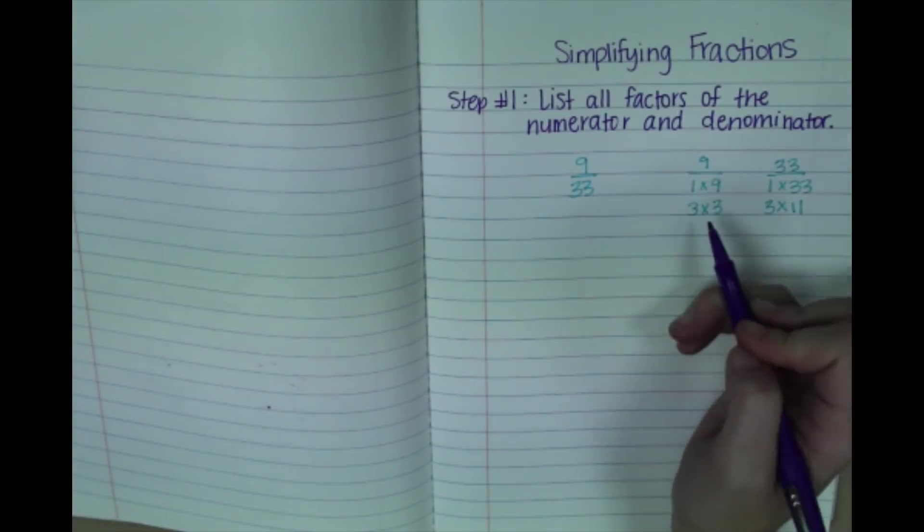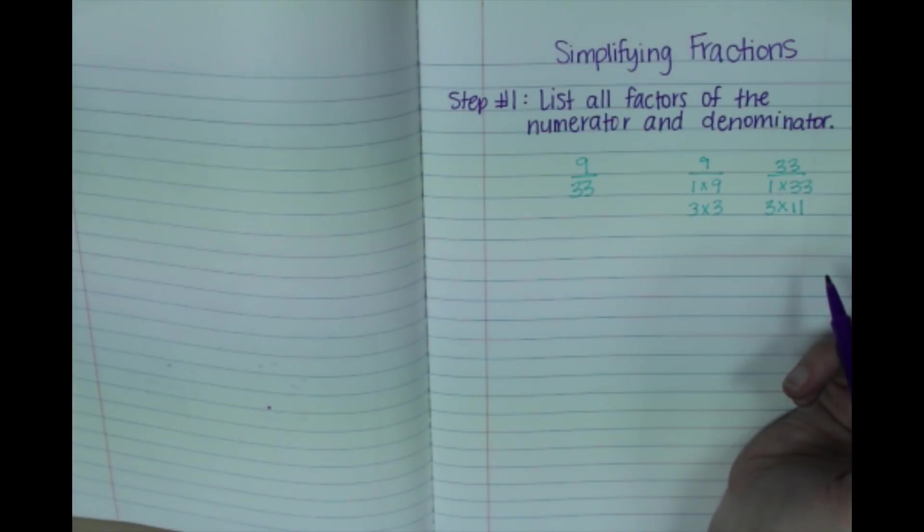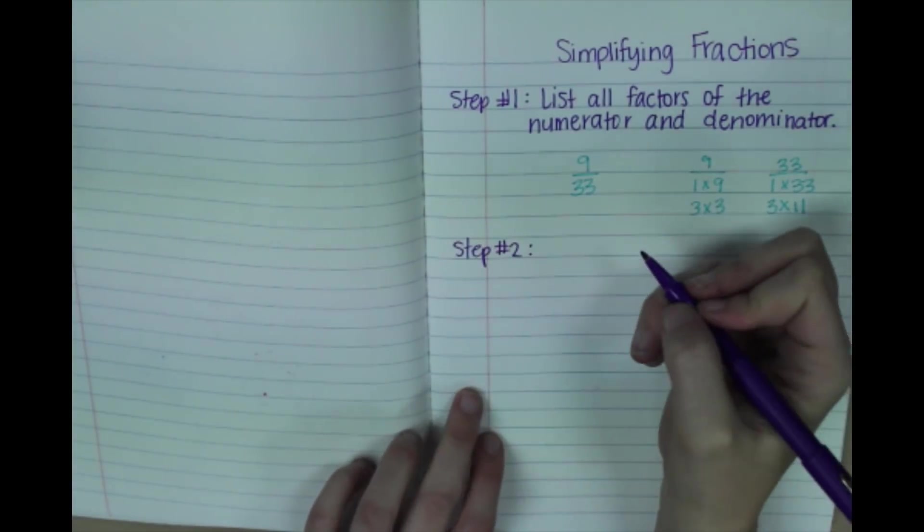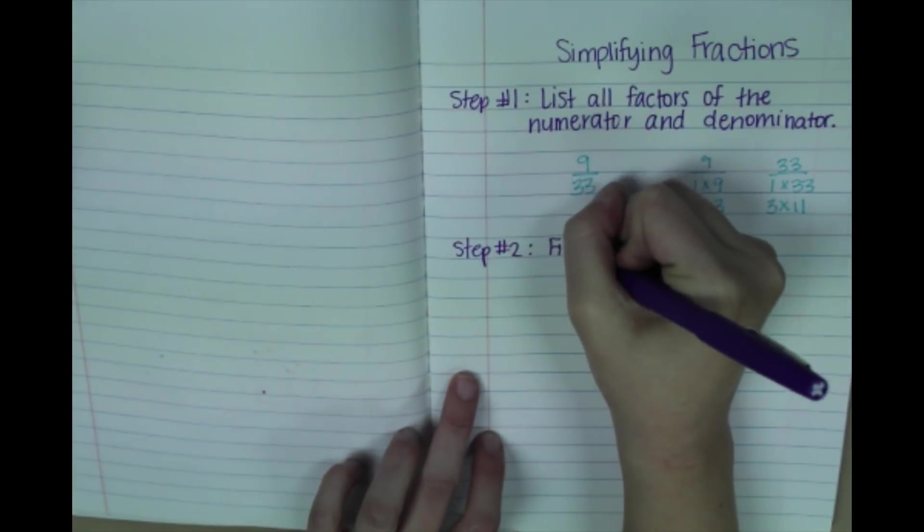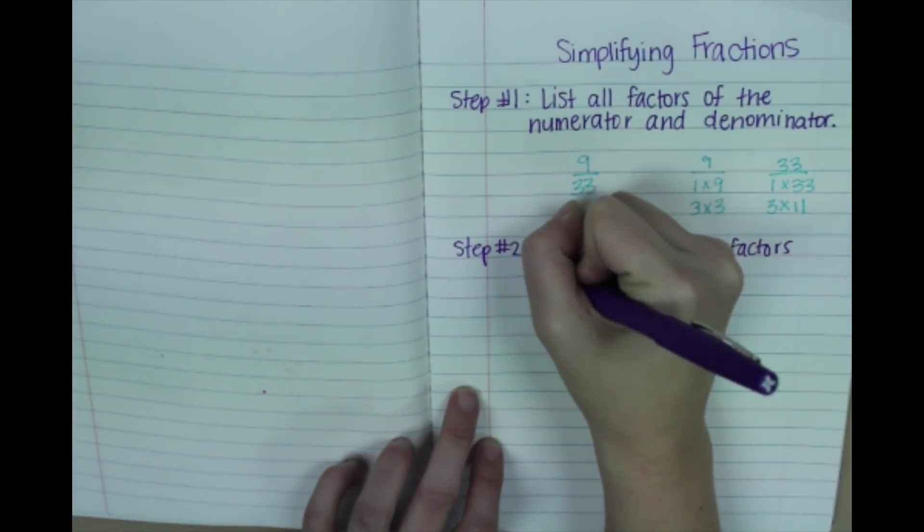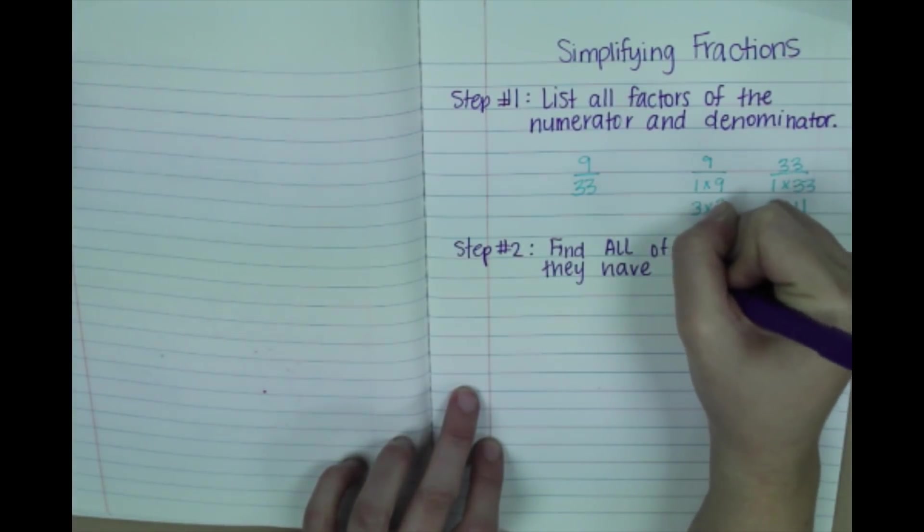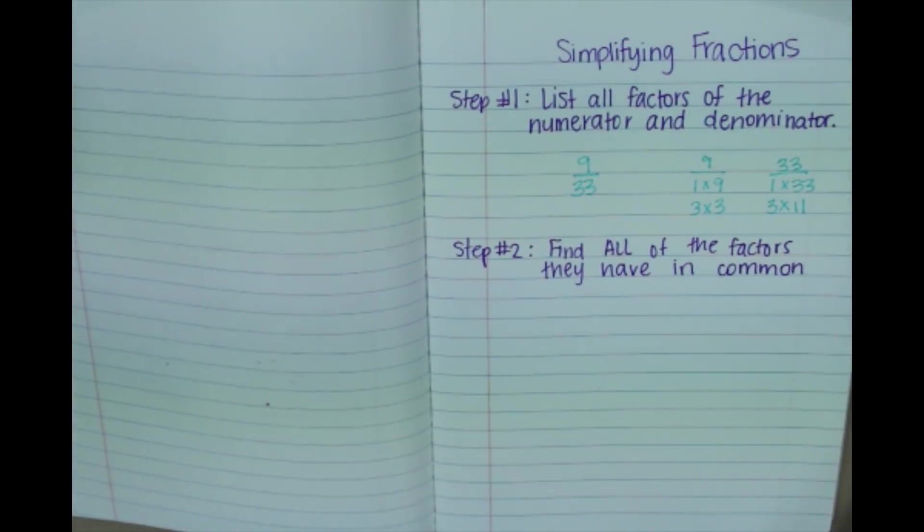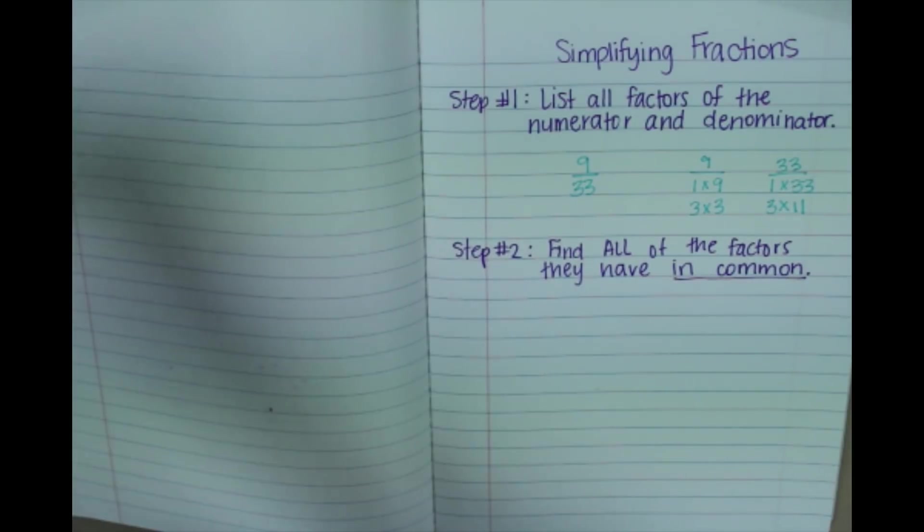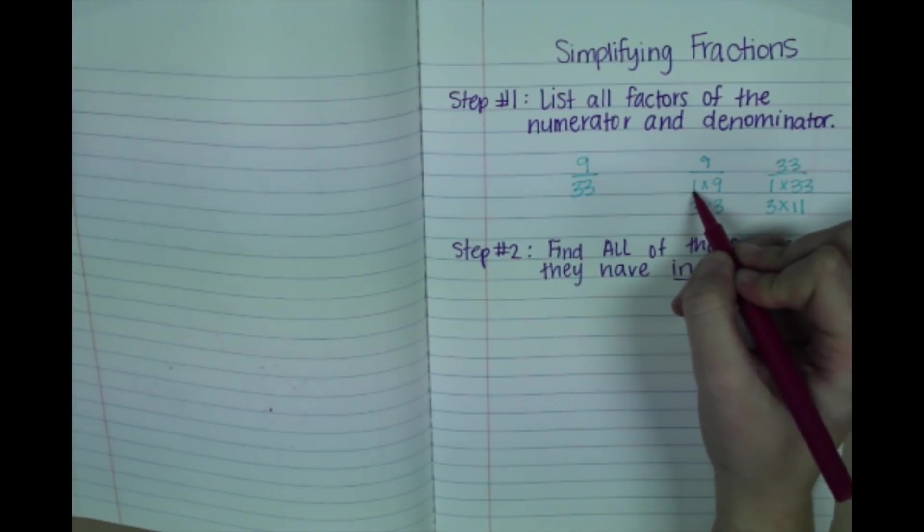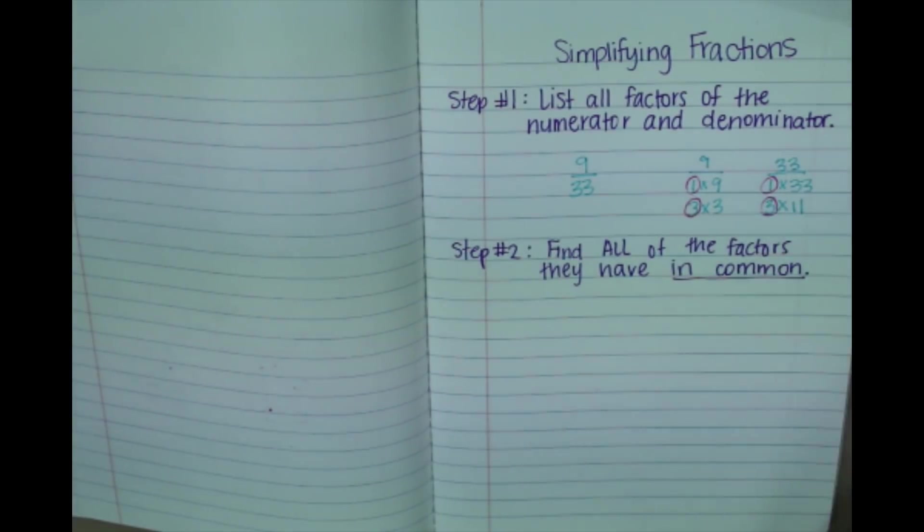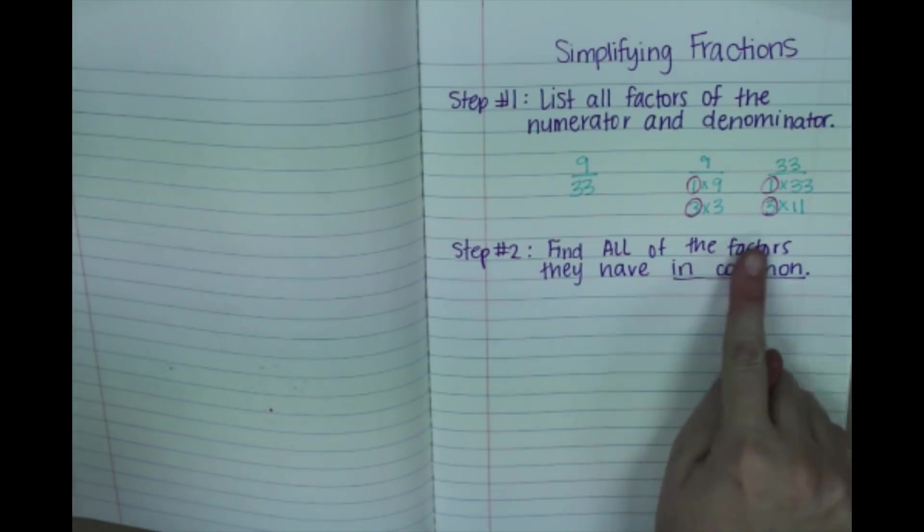Now you want to make sure that you have all the factors listed so that you do not miss something. And so step number 2 is to find all of the factors they have in common. Can y'all hear that music? I can. Okay, find all the factors they have in common. So going back up to my factors, we see that they have 1 in common, and they also have 3 in common. All the rest are different.